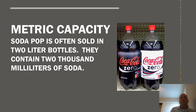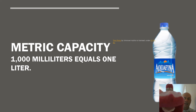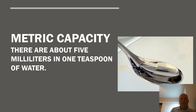So remember, it's two liters, and each liter is made of 1,000 milliliters — so this would have 2,000 milliliters of soda. So metric capacity: 1,000 milliliters equals one liter. One liter equals 1,000 milliliters.